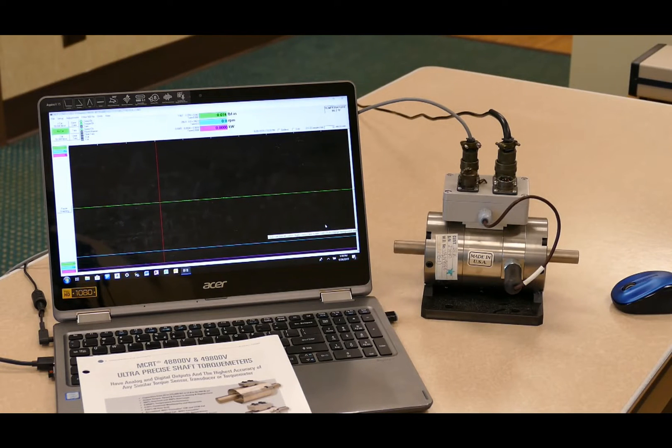They're also available with different mechanical overload ratings. Available mechanical overload ratings are 200%, 400%, and even 1000%, which offers supreme protection against torsional spikes or peaks that may be seen in different types of applications, either with high starting torques or applications where you have large torsional spikes such as diesel engine testing.